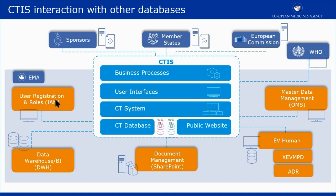IAM is a user registration process that provides individuals with access to the applications managed by EMA. Organizations need to be registered through the Organizations Management Service, the OMS. OMS provides a single source of validated organization data for CTIS, such as organization names and location addresses.